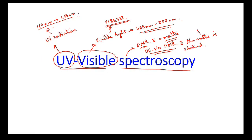The matter can be either in gaseous form, liquid form, or solid form. In the case of solid, it is usually reflective spectroscopy, whereas majorly in the case of gaseous and liquid systems, we mainly implement transmittance spectroscopy.